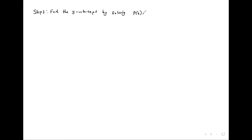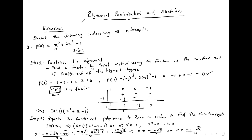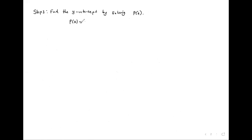Find the y-intercept by solving P of zero. P of zero is just the constant: zero cubed plus 2 times zero minus 1 gives us negative 1, so the point is (0, negative 1). Then step 4: sketch.